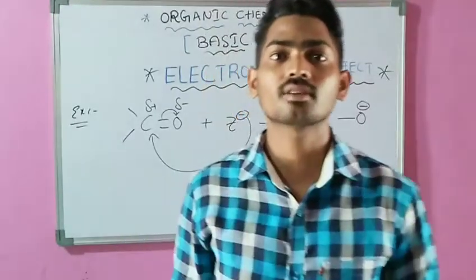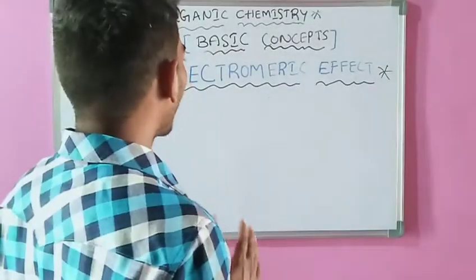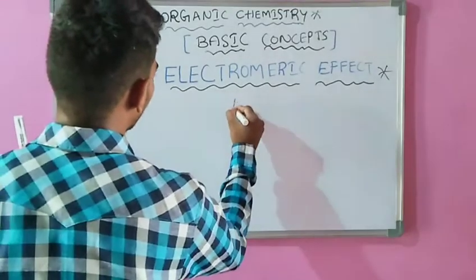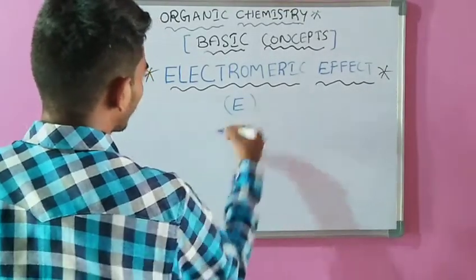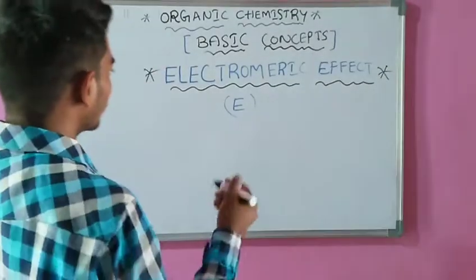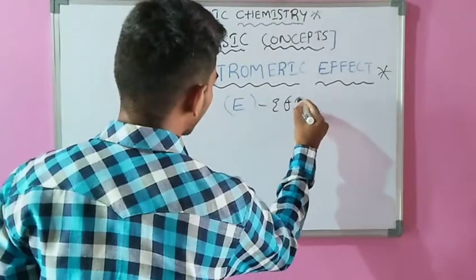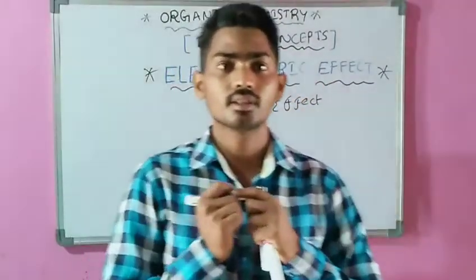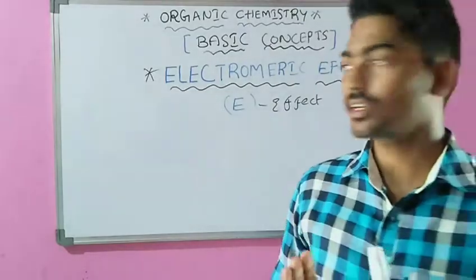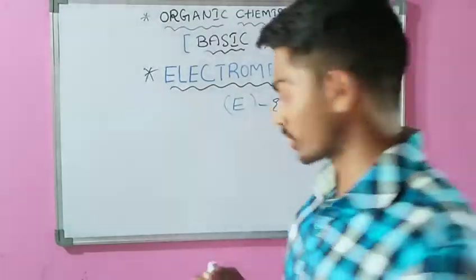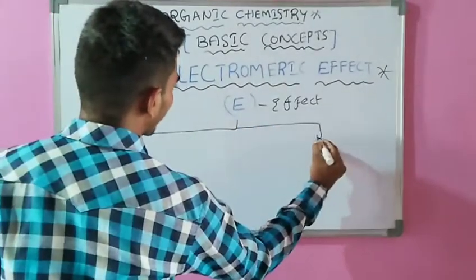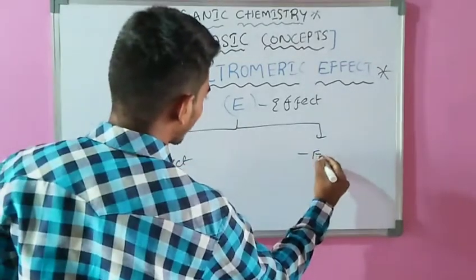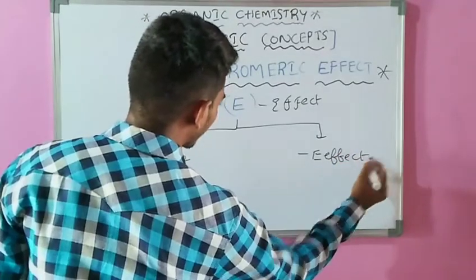Now, what are the classifications of the Electromeric effect? The Electromeric effect is mainly denoted with E, or the E effect. The Electromeric effect is mainly classified into two types: the first one is the positive Electromeric effect, and the second one is the negative Electromeric effect — that is the plus E effect and the minus E effect.